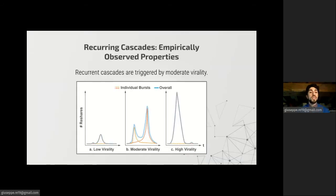They analyzed these recurring cascades and they observed some empirical properties. First, a quite counter-intuitive property, recurring cascades are associated to moderate virality. Moderate virality is what gives us the so-called twin peaks, while with high virality we get a high peak that exhausts pretty quickly the population interested in the meme, while with low virality we get a very small cascade.